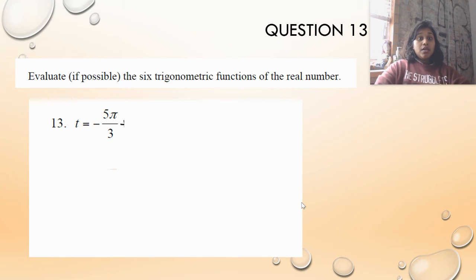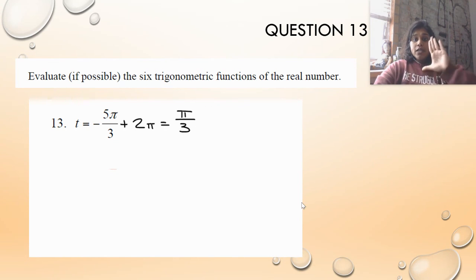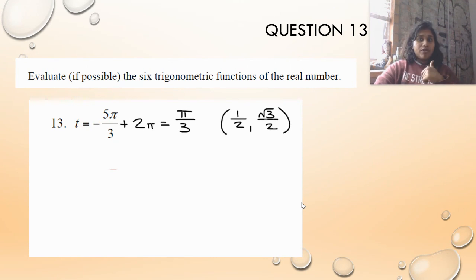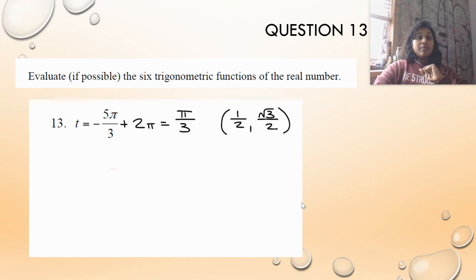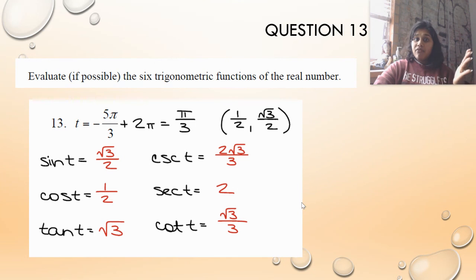One last problem. There are two steps: first move the angle into standard position, then find the coordinate point. The hint is it simplifies to just π over 3. Pause the video and figure out your coordinate point. Now fill out sine, cosine, and tangent — pause and attempt those on your own. Then do cosecant (related to sine), secant (related to cosine), and cotangent (related to tangent). That's all for today — see you in the next video!